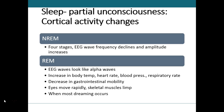During REM sleep, the eyes move rapidly back and forth under the eyelids. EEG readings show high-frequency waves very similar to those of a person who's awake. Neuronal activity is high, and blood flow and oxygen use in the brain are high. Despite all this, it is usually still very hard to wake a person during REM sleep.